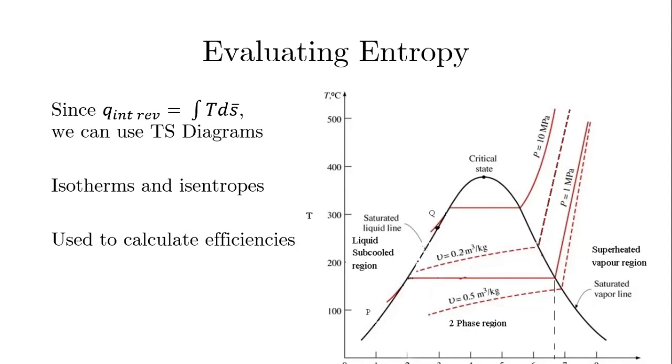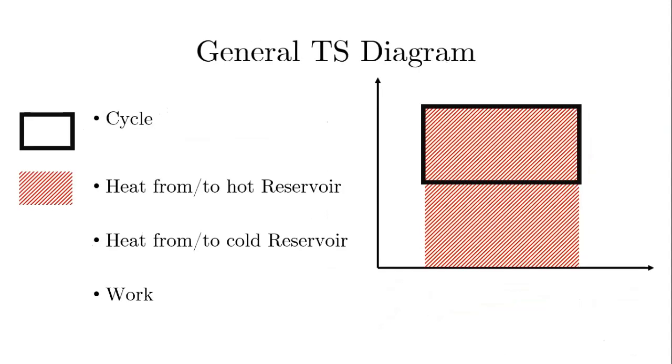And then we have a liquid region on the left and a vapor region on the right. You can also identify the critical state at the top of the dome. So this is just a typical TS diagram, which is sometimes useful depending on your application for it.